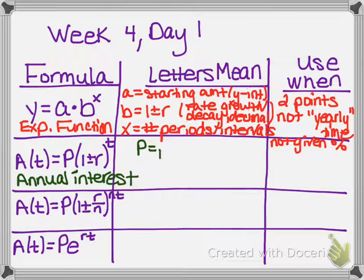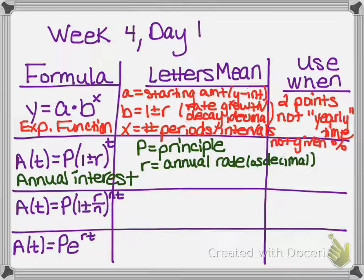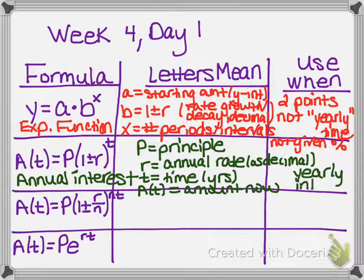This is also the equation we've used in the past when we have not been given a percent — we've had to use two ordered pairs to actually figure out our B value and therefore our R value. The next formula is when we have annual interest, meaning you are earning interest on money but only getting one payment per year. P is the principal amount or the initial starting amount — your starting amount of money. R is your annual interest rate, and once again it's got to be as a decimal. T is the amount of time you have invested your money, and that's got to be in years. A(t) is the amount of money you now have after T number of years. You use this when you have yearly interest.